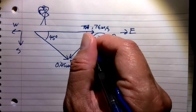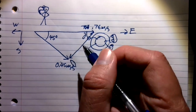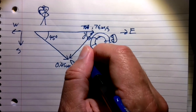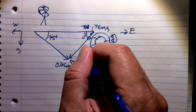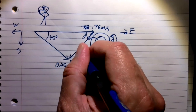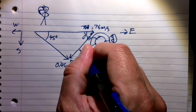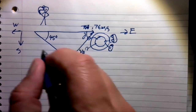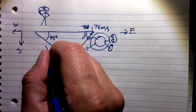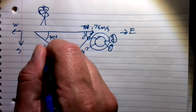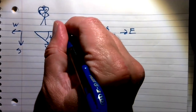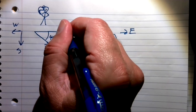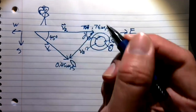We don't know what this angle is, and we're going to want to know what it is. We're also going to want to know this vector here — we'll call it VV, the vector of Ben, my son. So this is the velocity vector of the kayak, and this is the velocity vector of the river.